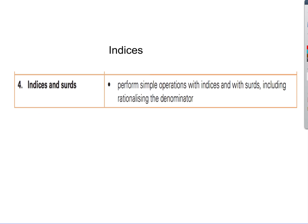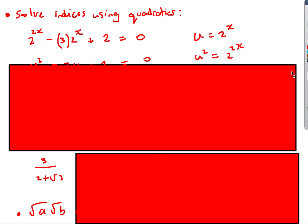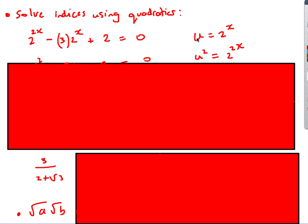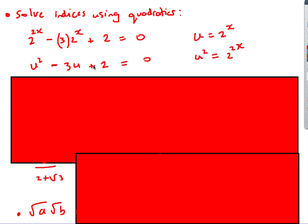Now let's look at two or three indices questions. Here's the first: 2^(2x) − 3 · 2^x + 2 = 0. The trick is to let u = 2^x. Then u² = 2^(2x) by the laws of indices, so we can rewrite the equation as a quadratic: u² − 3u + 2 = 0.